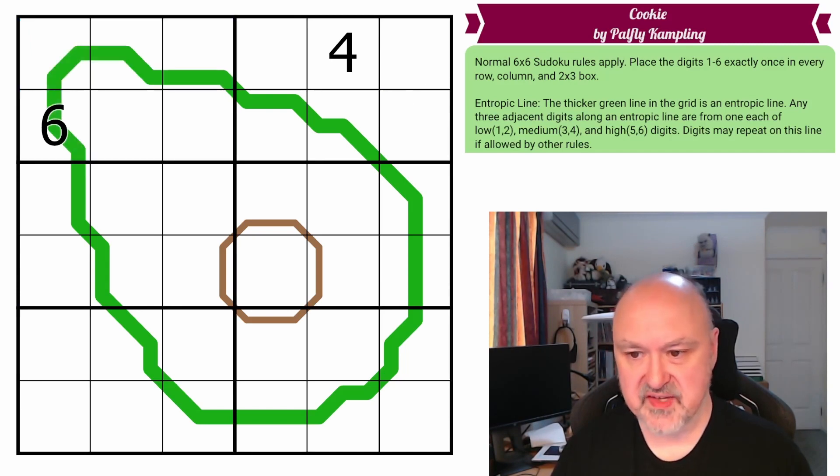The other rules in this puzzle are an entropic line, so the thicker green line is an entropic line, and any three adjacent cells along the line have to contain a set of digits which is 1 is low, from 1 or 2, 1 is medium, 3 or 4, and 1 is high, 5 or 6. Digits, of course, may repeat on the line if allowed by other rules.